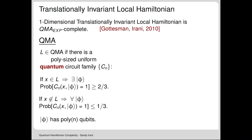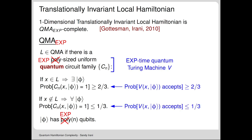Instead of QMA, we'll be looking at QMA_EXP, where the witness size is exponentially long in the input to the problem, as is the running time of the verifier. But remember, this is still polynomial in the size of the system.